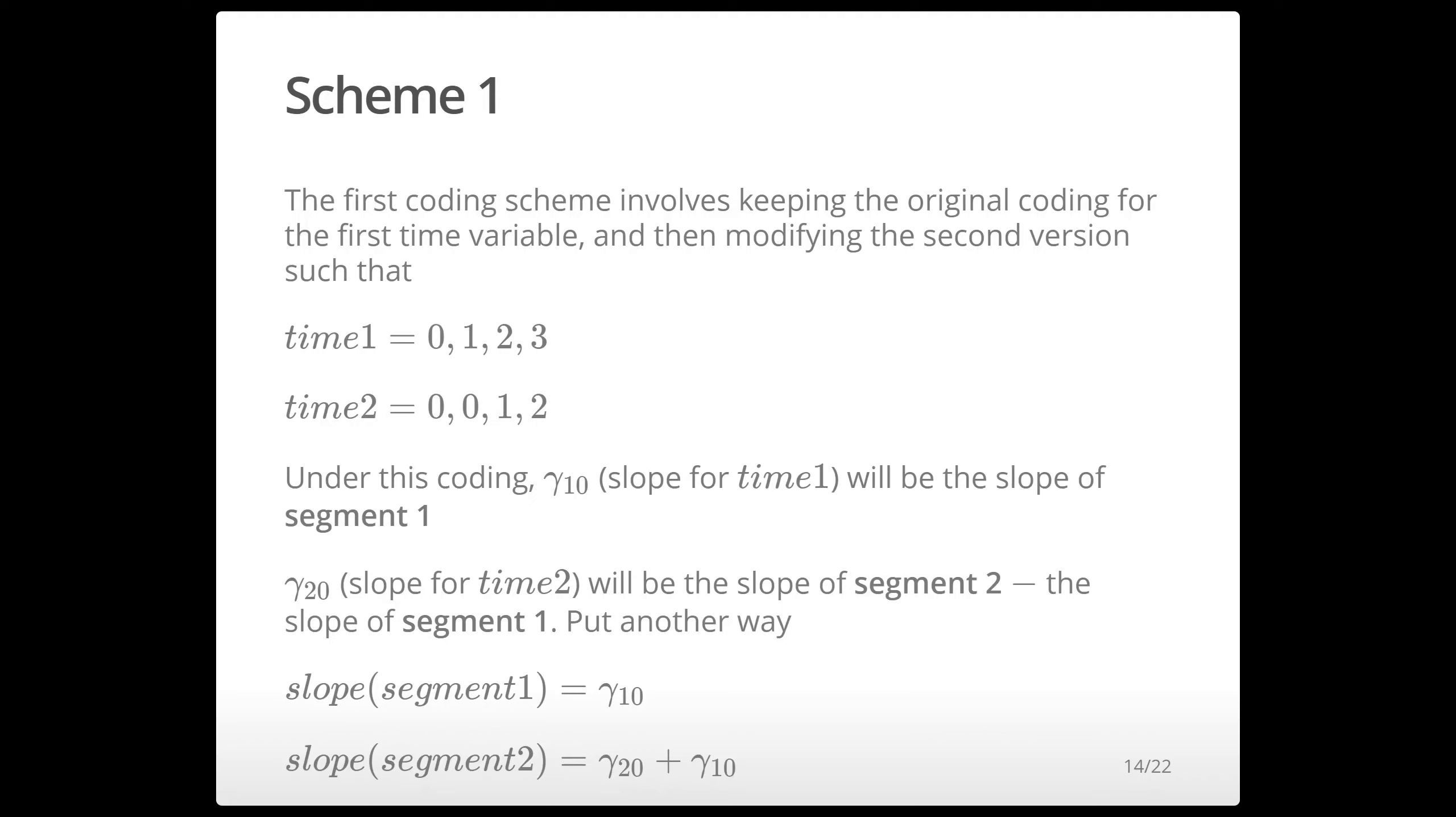So under this coding scheme you can interpret the slope of the first segment as just the first gamma parameter. So the parameter for time one is the first line segment slope and the second line segment slope is the sum of the two parameters so gamma 20 plus gamma 10.